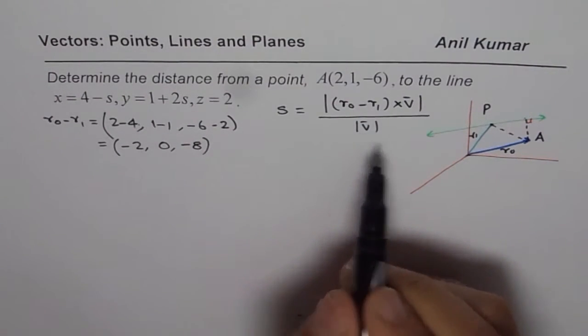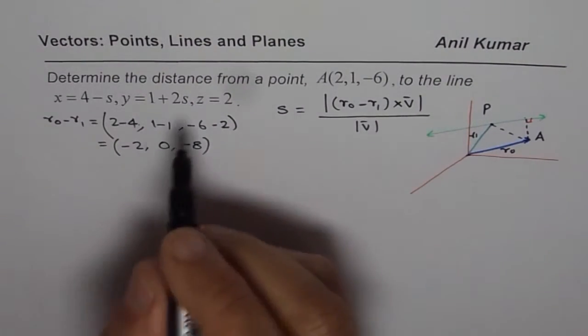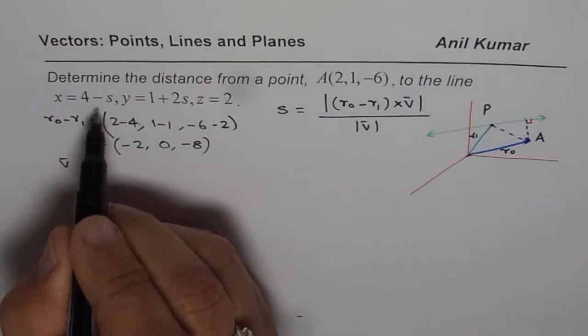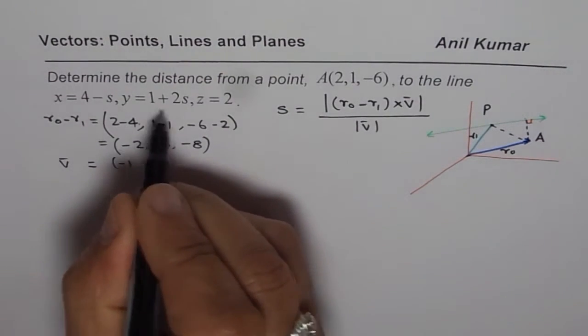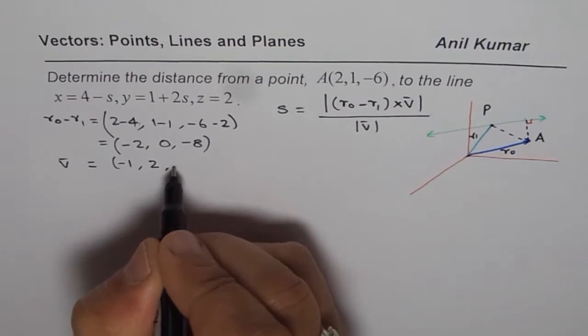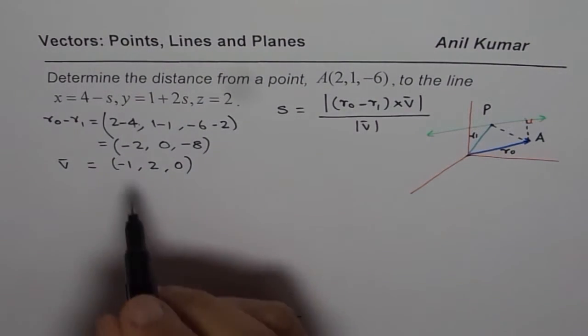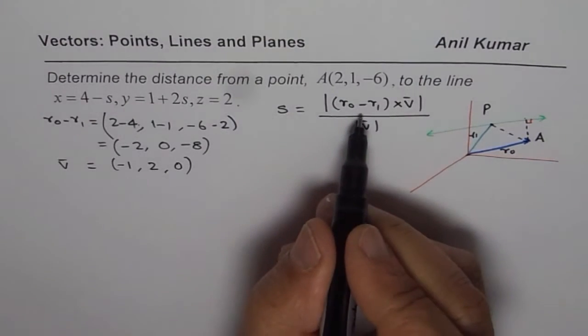Now what is V? V is the direction of this line. So for us, vector V is equal to minus 1, 2 and 0. That is the direction. Now we know all this. We can substitute in this formula.